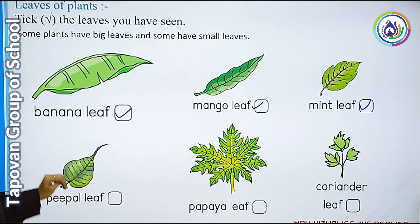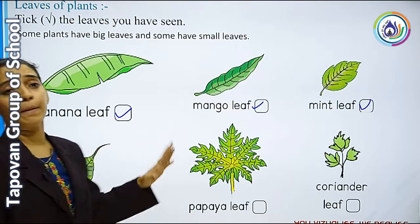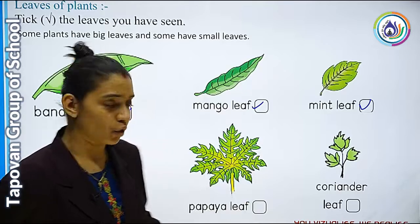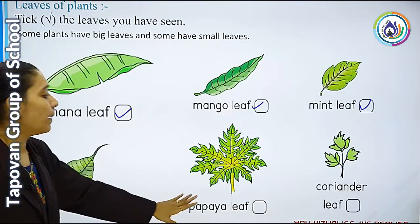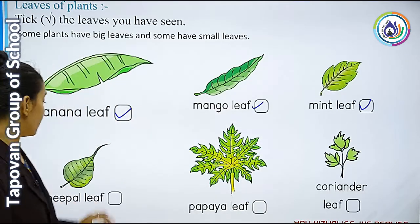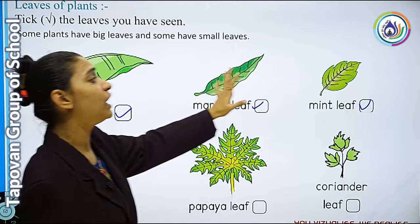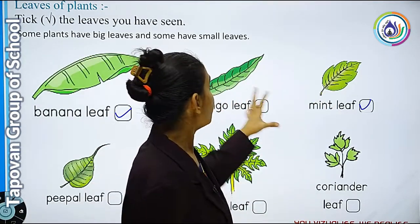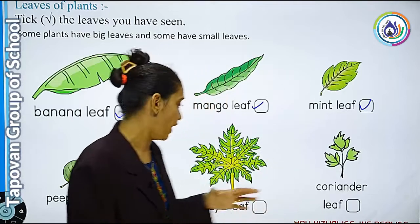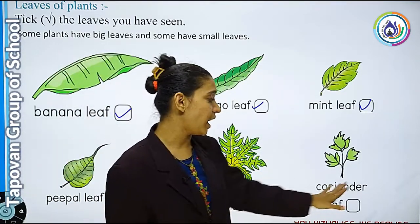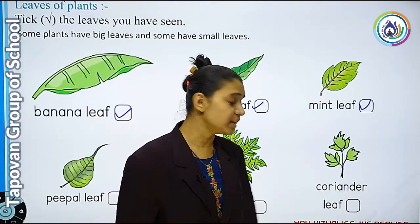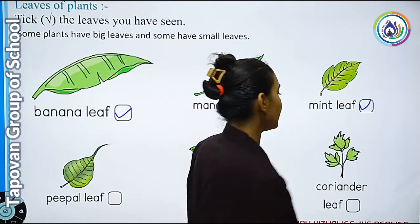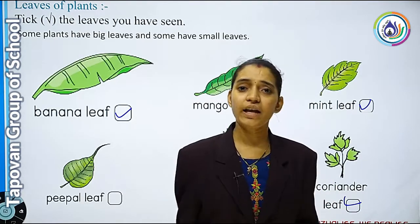Peepal leaves — peepal के पेड़ का जो leaf होता है वो size में medium होता है. फिर papaya leaves. यहाँ पे आपको जितने भी leaves दिए गए हैं, सारे different sizes के हैं, different patterns के हैं. Next है coriander leaves, यानि कि धनिया पत्ता — ये तो सारे बच्चों ने देखा है.